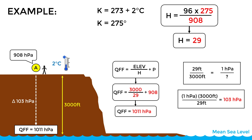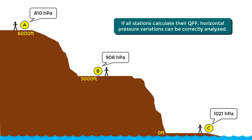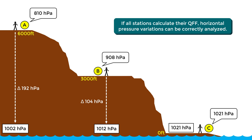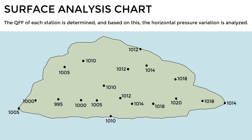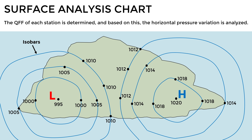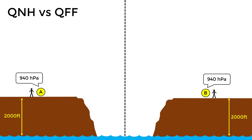Now that we know what QFF is and how it is calculated, we can say that if all weather stations calculate and publish their QFF, horizontal pressure variations can be correctly analyzed even if the stations are at different elevations. This allows us to determine high and low pressure areas objectively, as well as to draw the corresponding isobars in surface analysis charts. In summary, the QNH is mainly used for altimetry purposes in air operations, while the QFF is used by meteorological services to study surface pressure behavior. However, this implies that there is a certain relationship between these two concepts, depending on the temperature.